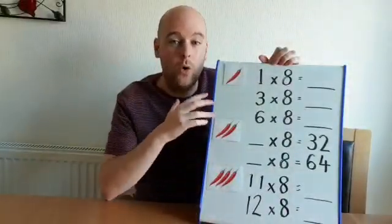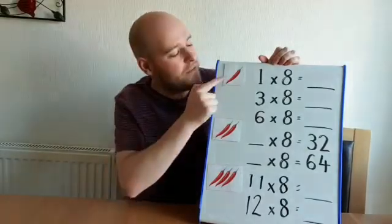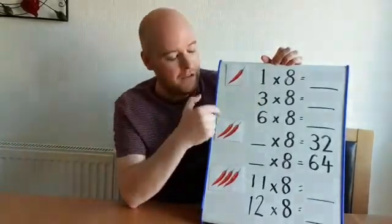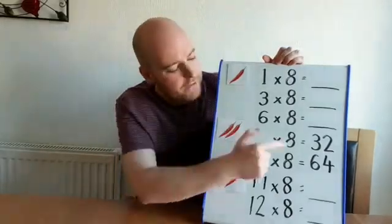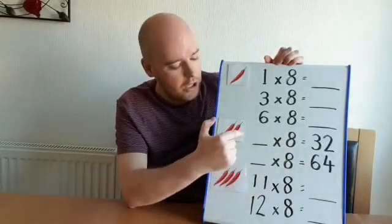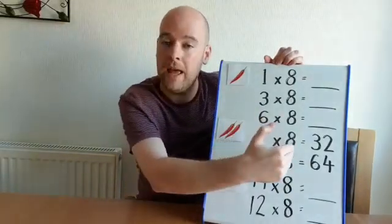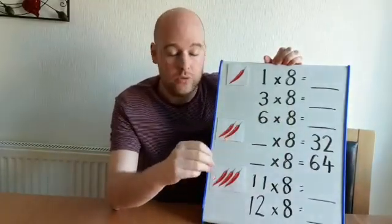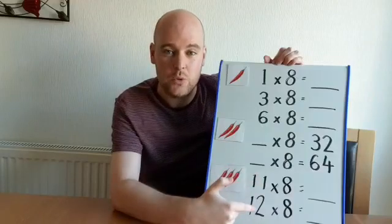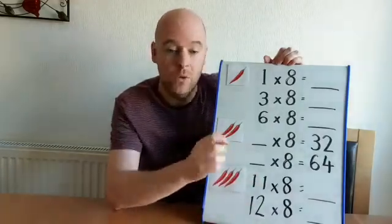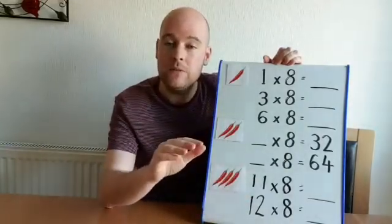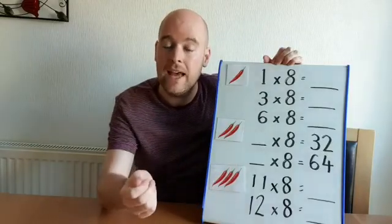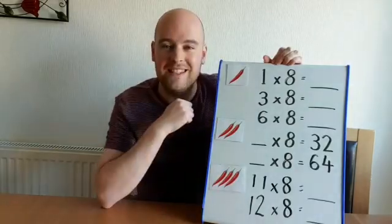Right, here are your chilli challenges for today, all based around the 8 times table. If you're feeling like you want to give the one chilli a go, there are some of the ones we've just done: 1 times, 3 times and 6 times 8. If you feel like giving two chilli a go and challenging yourself, I've given you the answers but there's something missing from the number sentence — can you work out what we have to multiply by 8 to get to these answers? And finally, my counting stick only goes up to 10, so I could really do with your help working out 11 times 8 and 12 times 8. See if you can remember some of the methods we've used before. Good luck. Pause the video now and have a go, either on a sheet of paper or in your home learning books, then play the video again once you've had your best go and we'll see some answers together.